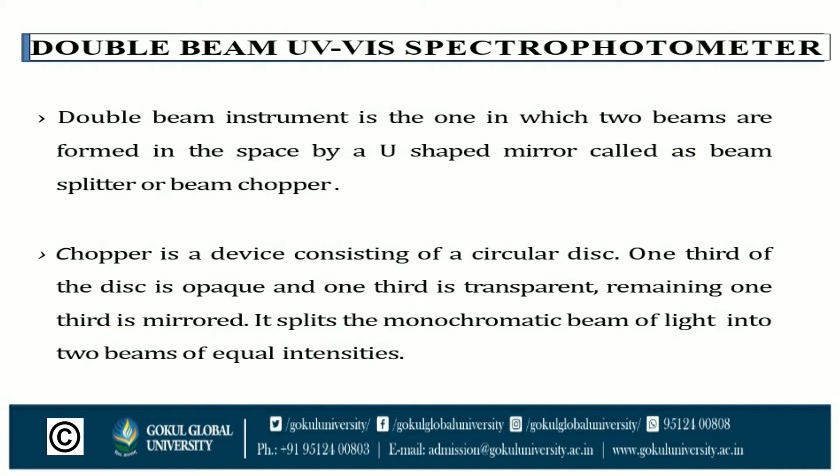The chopper is a device consisting of a circular disk. One third of the disk is opaque, one third is transparent, and the remaining one third is a mirror. It splits the monochromatic beam of light into two beams of equal intensities. Importantly, both generated beams have equal intensities.